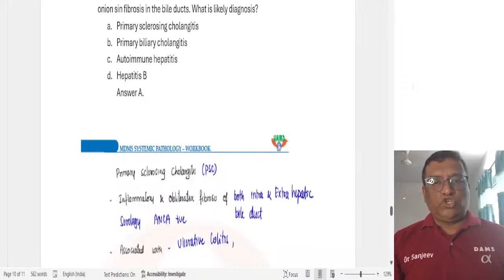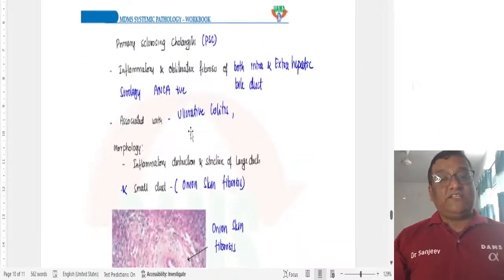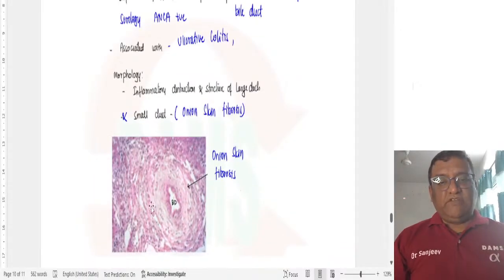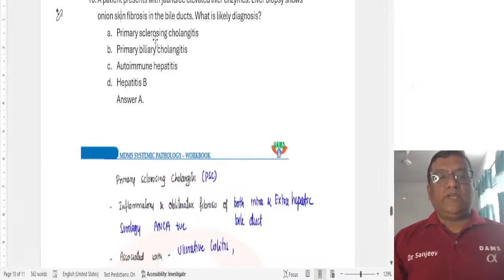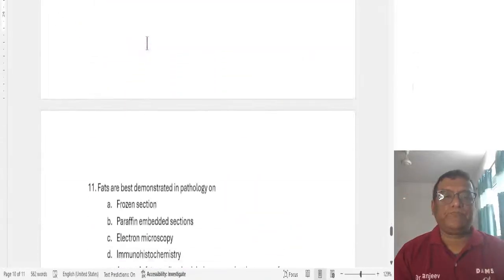Question number 10. A patient presents with jaundice, elevated liver enzymes. Liver biopsy shows onion skin fibrosis. There is onion skin fibrosis in the bile ducts. They did not give image. What's the likely diagnosis? Primary sclerosing cholangitis, primary biliary cholangitis, autoimmune hepatitis and hepatitis B. Onion skin fibrosis is very characteristically seen in primary sclerosing cholangitis. Again, this question was there in the class test as well as in your subject-wise test. We discussed it in your class. Primary sclerosing cholangitis will be having an onion skin. Primary biliary cirrhosis will have florid duct lesion and granulomas can be seen on biopsy. Autoimmune hepatitis, plasma cell. Hepatitis B will show ground glass hepatocytes.